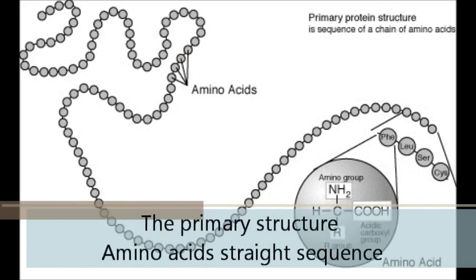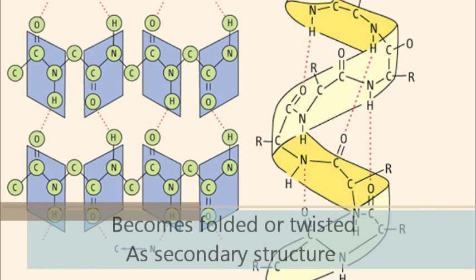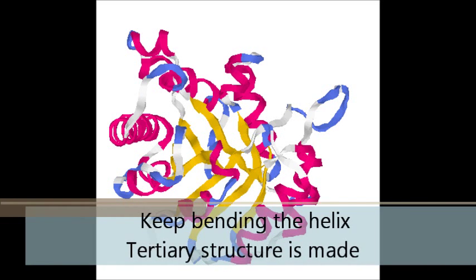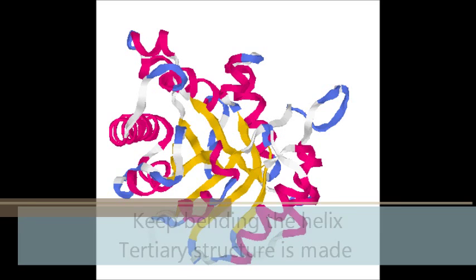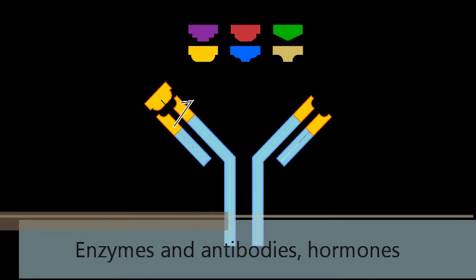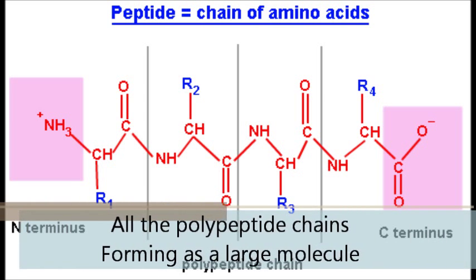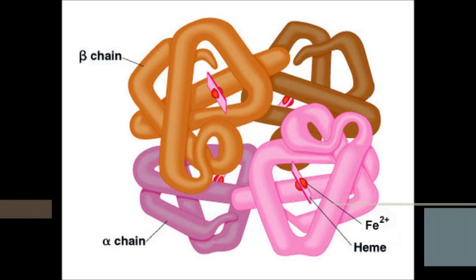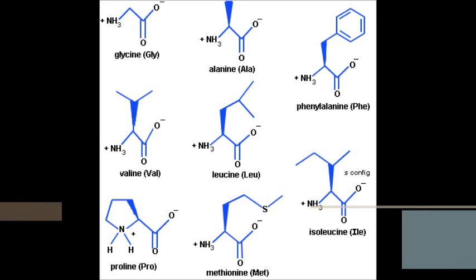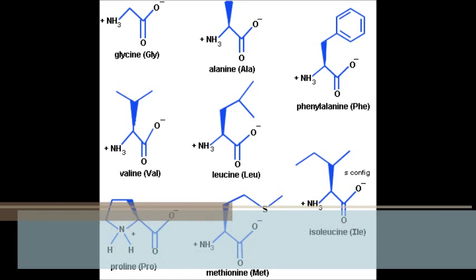The primary structure is the amino acid sequence. It becomes folded or twisted as the secondary structure. Keep bending the helix and the tertiary structure is made — enzymes, antibodies, and hormones. All polypeptide chains forming a large molecule give the quaternary structure. Hemoglobin is one example.